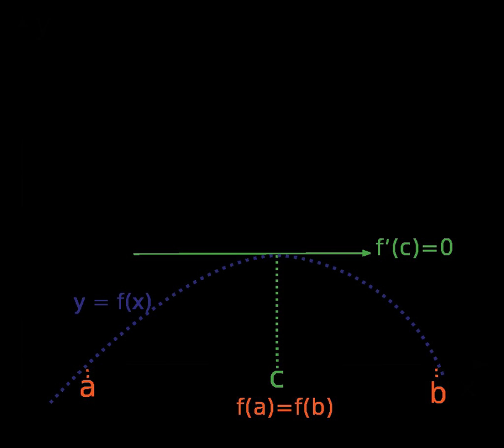This function is continuous on the closed interval and differentiable in the open interval, but not differentiable at the endpoints −r and r. Since f(−r) equals f(r), Rolle's theorem applies, and indeed, there is a point where the derivative of f is zero.